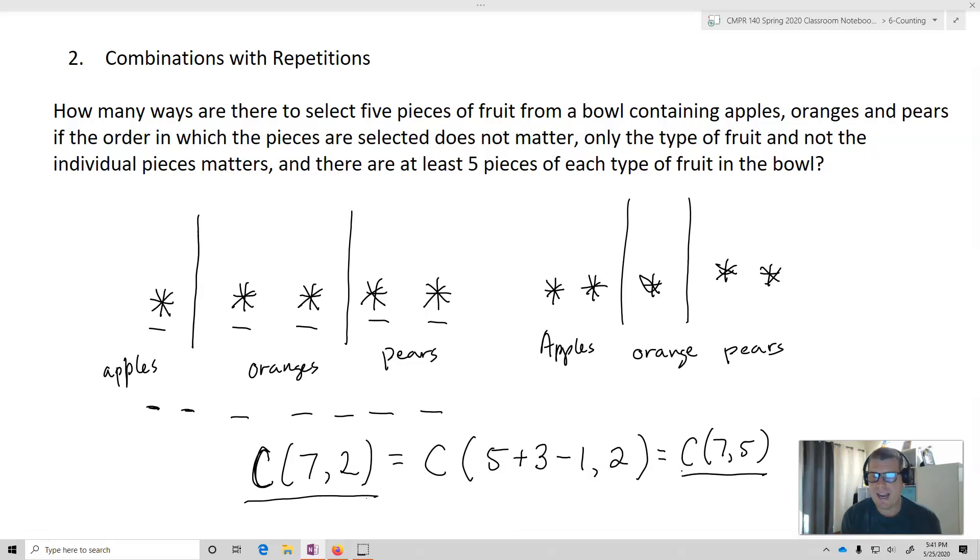Now, in this case, all the stars, all of our pieces of fruit, and our bars, they're not different in any way. The order in which we place these things, it's not going to matter. One bar in one place is the same as having the other bar in the same place. So that's why we're utilizing the combination. And this is how we utilize the stars and bars. Why don't we take a look at another example?